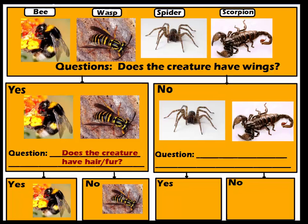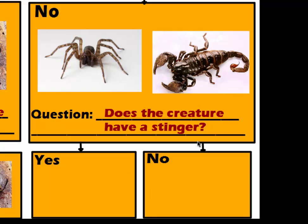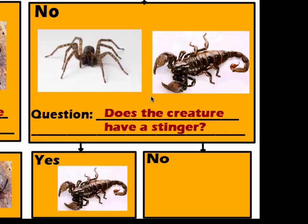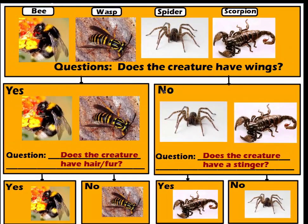Now for the spider and scorpion in the no-wings box. You'll notice several differences — most obvious on the scorpion. The scorpion has a tail, whereas the spider does not. The scorpion has a stinger, while the spider may have fangs but not a stinger. The scorpion has claws; the spider does not. We'll use the stinger as our question: does the creature have a stinger? The scorpion goes in the yes box; the spider goes in the no box. So the creature without wings but with a stinger is the scorpion, and without wings and without a stinger is the spider.